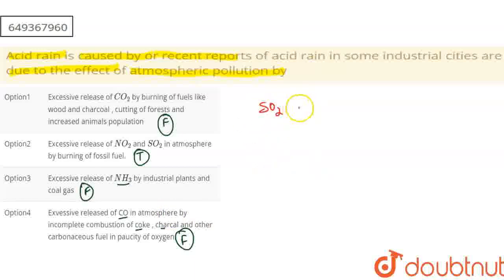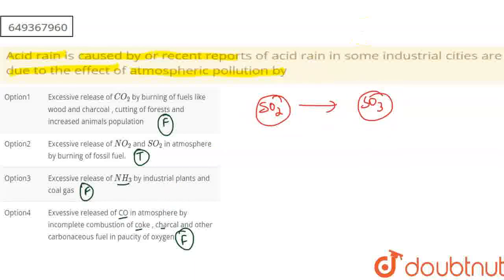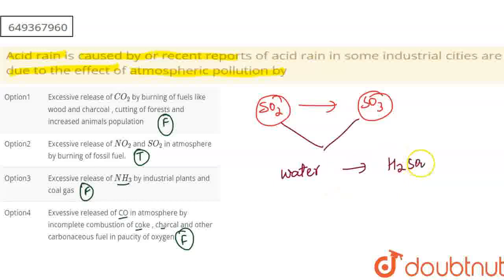When we release SO2 in air, SO2 gets oxidized in the presence of oxygen to form SO3. So both SO2 and SO3 are present in air. These gases mix with water and react to form sulfuric acid. These acids then come down to the earth in the form of acid rain.